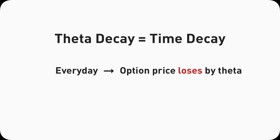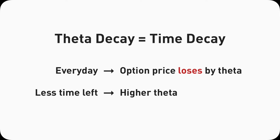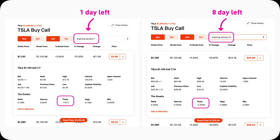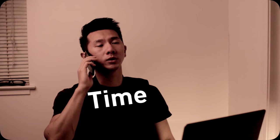Now we can dig deeper into what influences the theta value. There are two main factors. The first one is time. You might have heard of time decay or theta decay — they mean the same thing, describing how time causes option prices to drop. Similar to gamma, theta's value increases when there's less time left until expiration. Meaning, if we take two option contracts with the same strike price — say a 1100 Tesla call — the theta for the call with only one day until expiration will be higher than the one with eight days until expiration, simply because there's less time left.